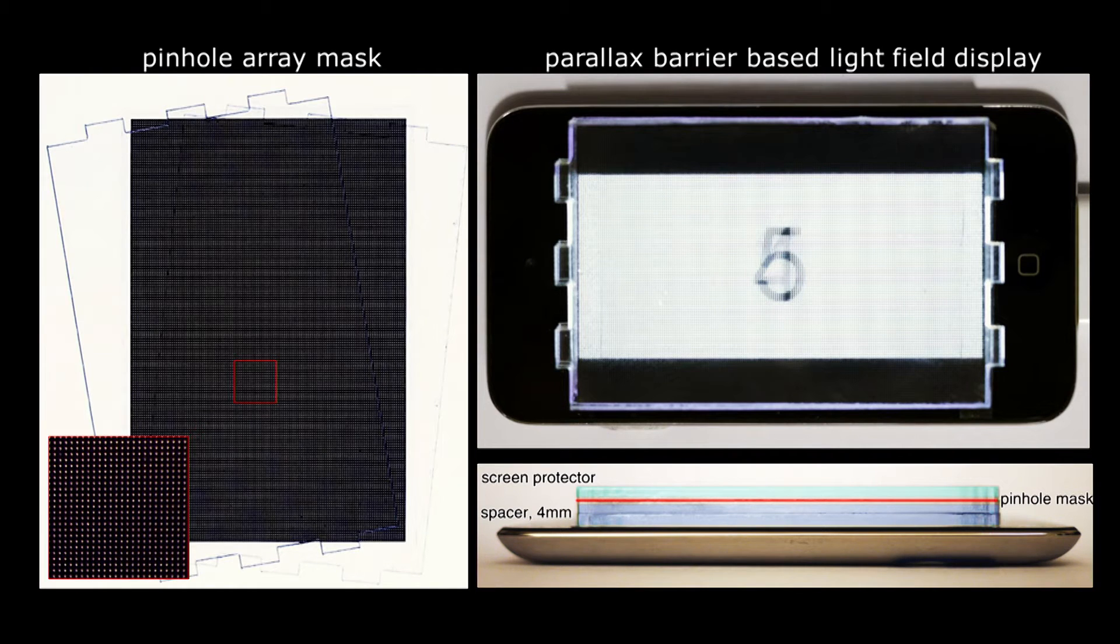The construction of this light field display is pretty simple. It is basically just a parallax barrier-based light field display using a printed pinhole array mask. The construction is pretty thin. The add-on is just a few millimeters thick to the iPhone or iPod touch.